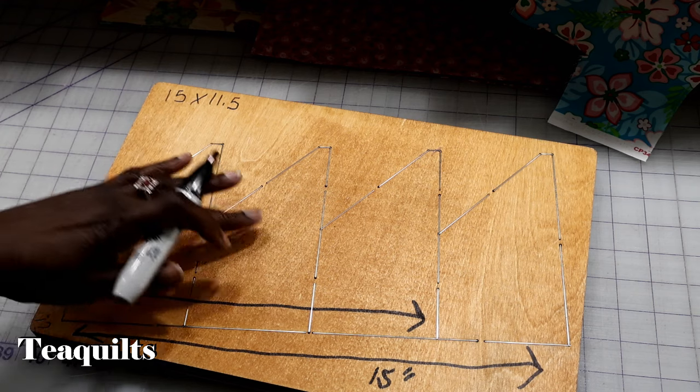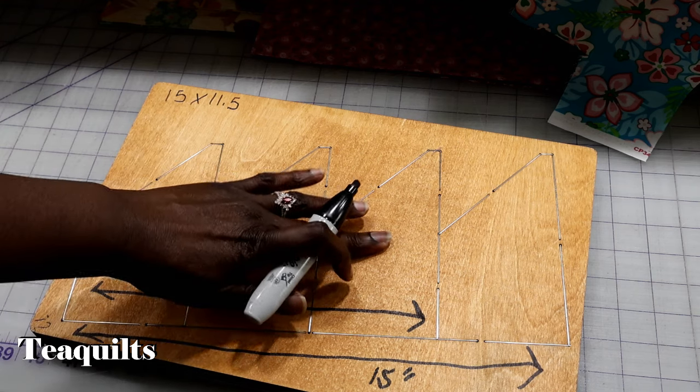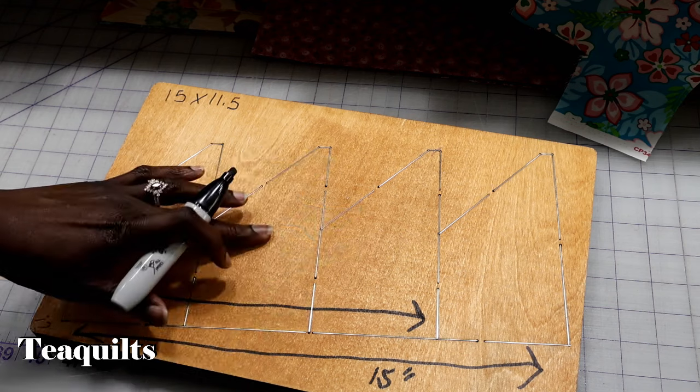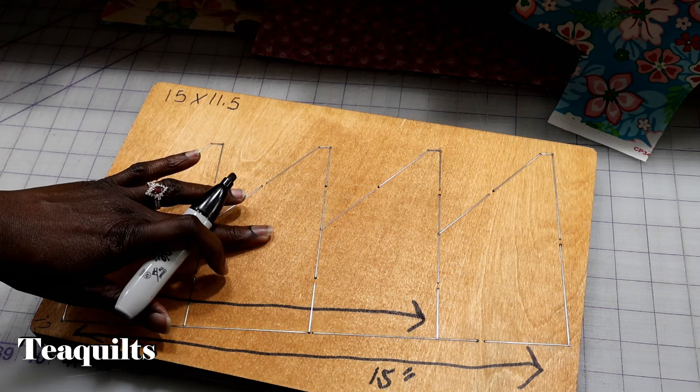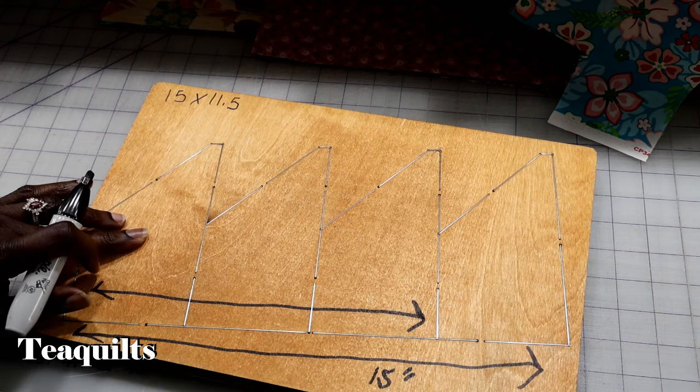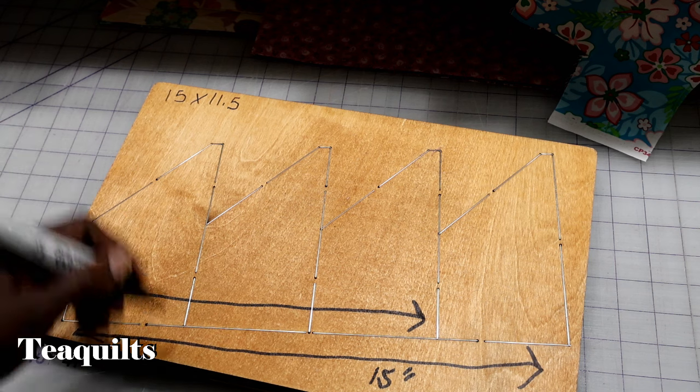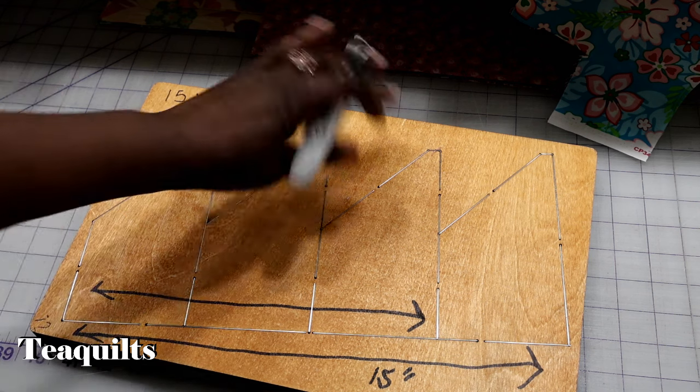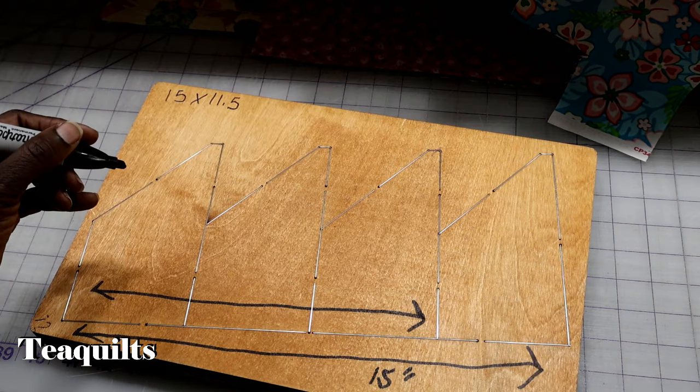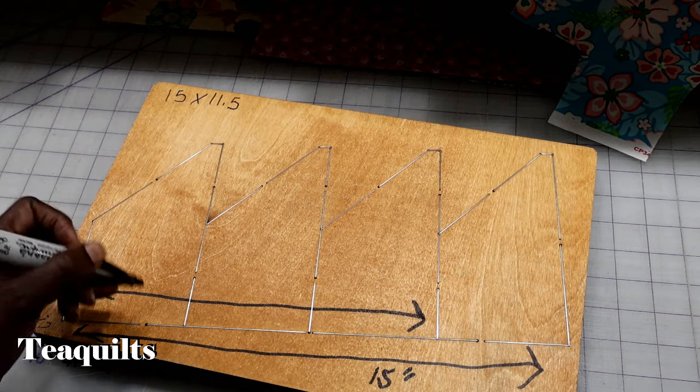So these are three and a half, three and a half, three and a half finished. So this three and a half and this three and a half would be seven, plus another three and a half would be ten and a half. I like to give myself an extra inch because when I go to cut the other side, I'm going to need that little extra room.